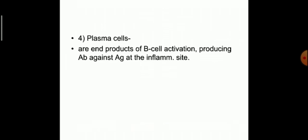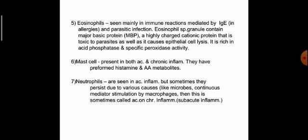Another important cell is the plasma cell, which is nothing but the activated B-lymphocyte — it produces antibodies against the antigen at the inflammatory site. Eosinophils are also important; they are seen mainly in immune reactions mediated by IgE (immunoglobulin E), occurring mainly in allergies and parasitic infections. Eosinophils contain granules with major basic protein (MBP), a highly charged cationic protein that is toxic to parasites and also causes epithelial cell lysis. They are rich in acid phosphatase and specific peroxidase activity.